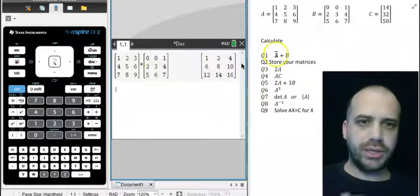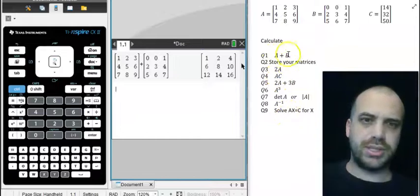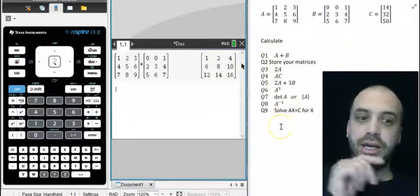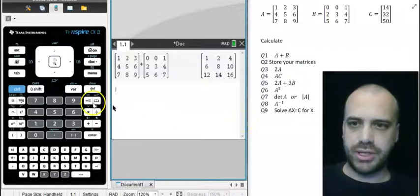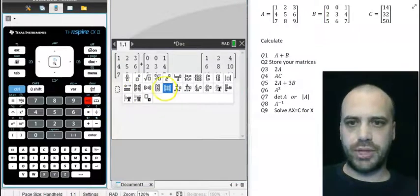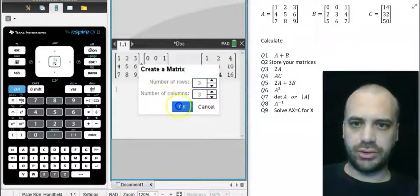But given I'm going to do a bunch of calculations with the same matrices over and over again, it'd be a good idea to store those matrices. So the way to do that, put in your matrix again. I'll do A here.